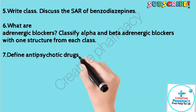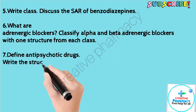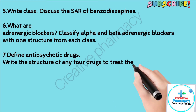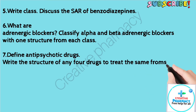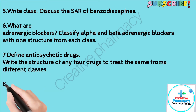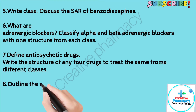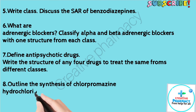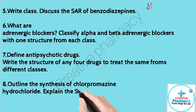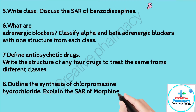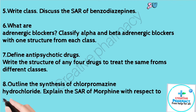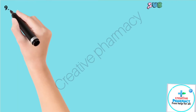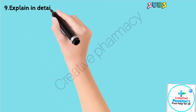Question 7: Define antipsychotic drugs and write the structure of any four drugs to treat the same from different classes. Question 8: Outline the synthesis of chlorpromazine hydrochloride, and explain the SAR of morphine with respect to peripheral modification.